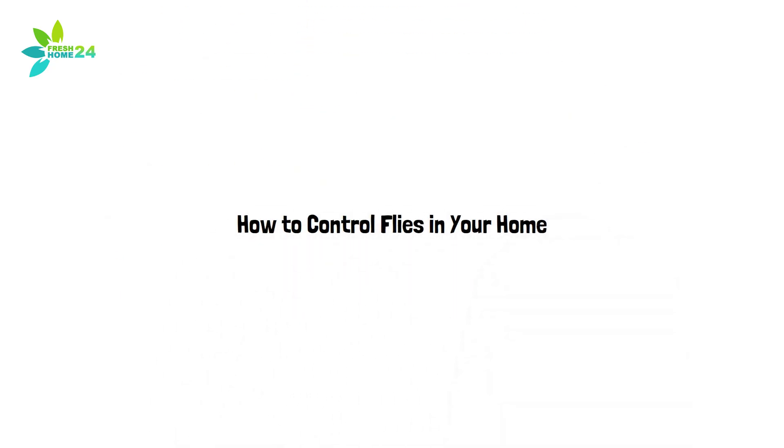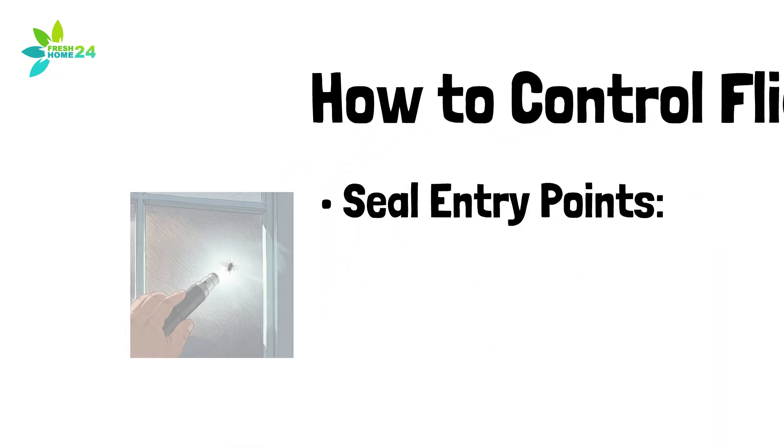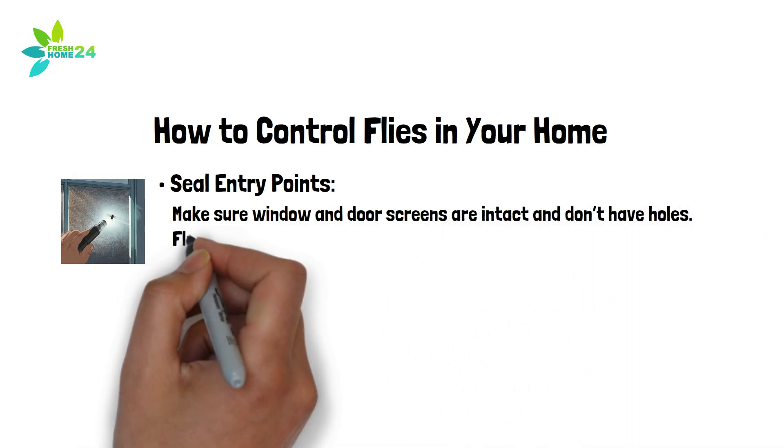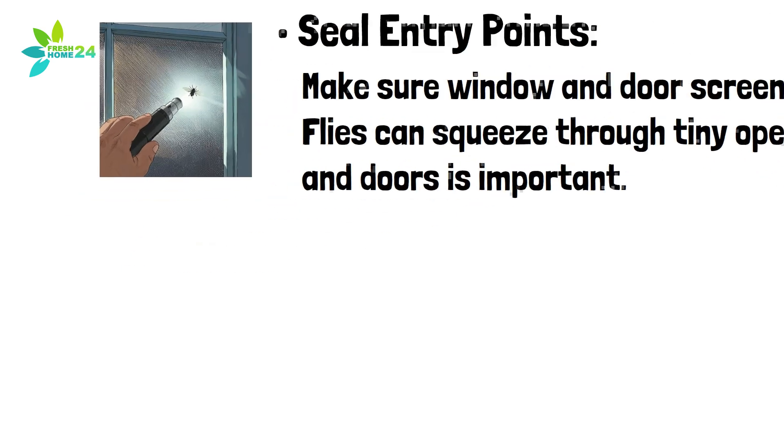How to control flies in your home. Knowing how fast flies can reproduce makes it clear that prevention is key. Here are a few tips to keep them away. Seal entry points. Make sure window and door screens are intact and don't have holes. Flies can squeeze through tiny openings, so sealing gaps around windows and doors is important.